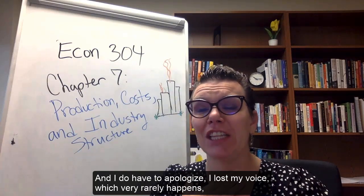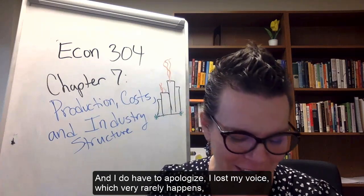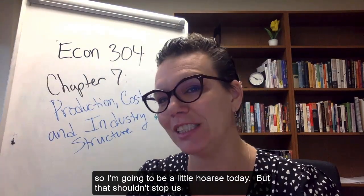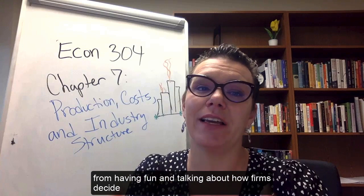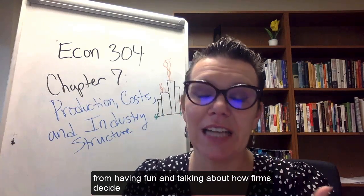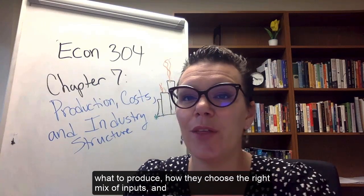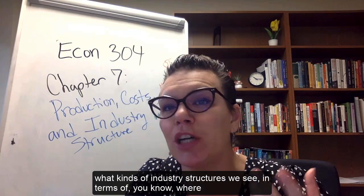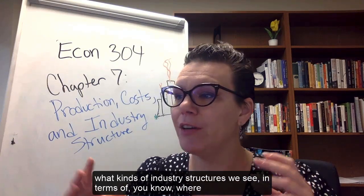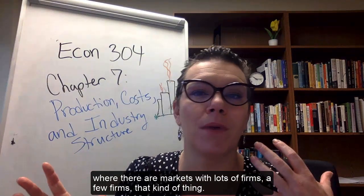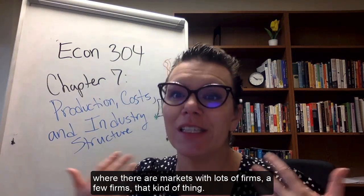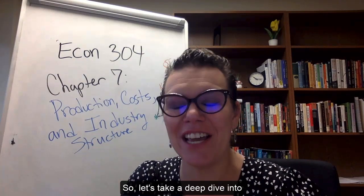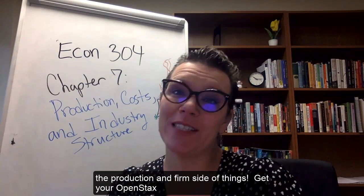I do have to apologize — I lost my voice, which very rarely happens, so I'm going to be a little bit hoarse today. But that shouldn't stop us from having fun and talking about how firms decide what to produce, how they choose the right mix of inputs, and what kinds of industry structures we see — where there are markets with lots of firms, a few firms, that kind of thing. So let's take a deep dive into the production and firm side of things.